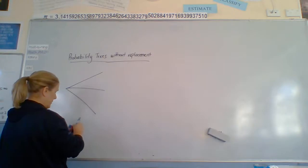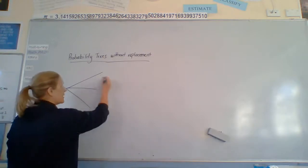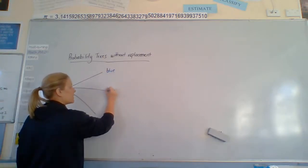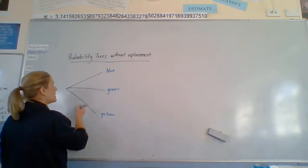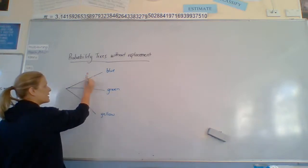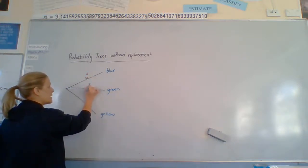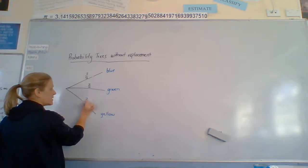All right, we've got blue, green, and yellow. And we said we had 2 twelfths, 3 twelfths, and 7 twelfths. Okay?